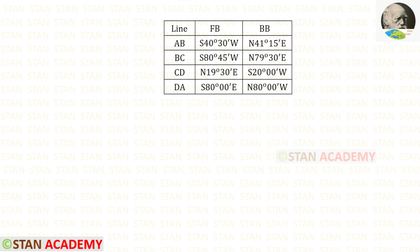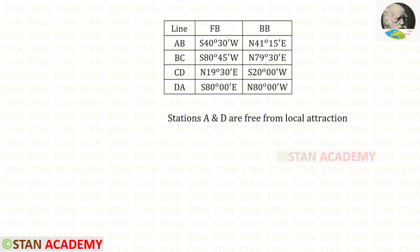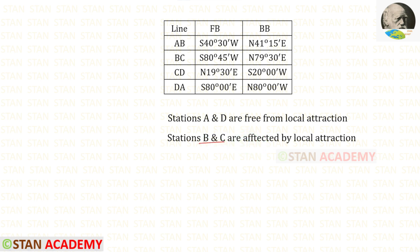First, let us see which stations are affected by local attraction. These bearings are given in reduced bearing. In reduced bearings, the fore bearing and back bearing should have the same value. For lines AB, BC, and CD, the fore bearing and back bearing are different. For line DA, they are the same — 80 degrees 0 minutes. So stations D and A are free from local attraction, while stations B and C are affected.